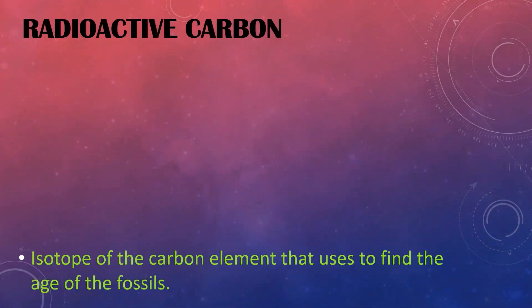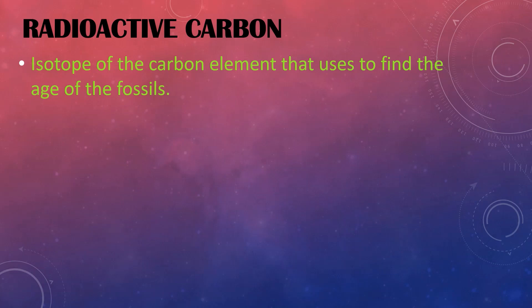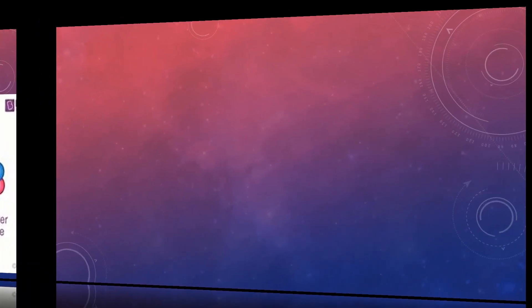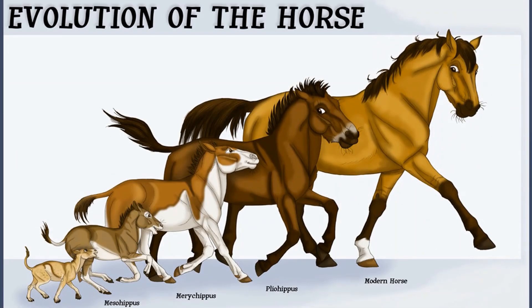Radioactive carbon is the isotope of the carbon element that is used to find the age of fossils. Evolution of the horse: It is believed the first horses were generated in North America 54 million years ago. Its height was 40 cm, such as a dog. A significant feature of the horse is fingers in front legs that use for browsing.